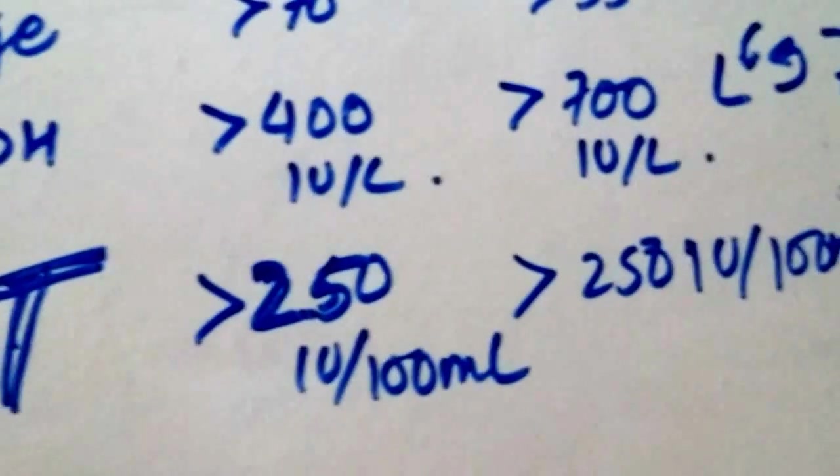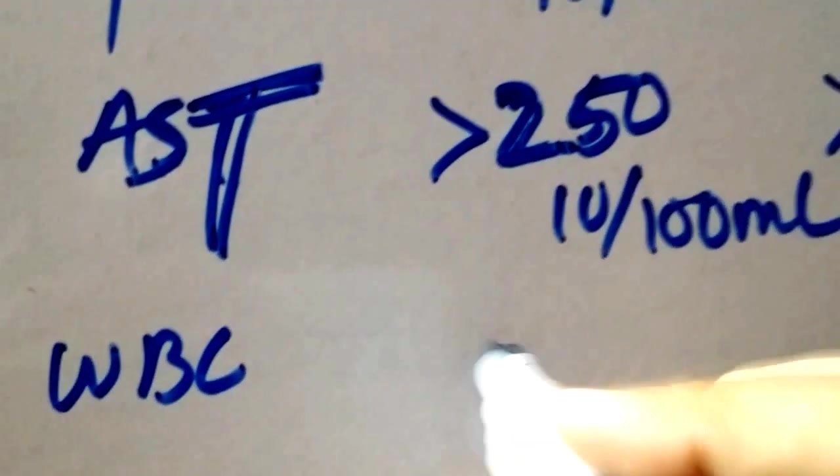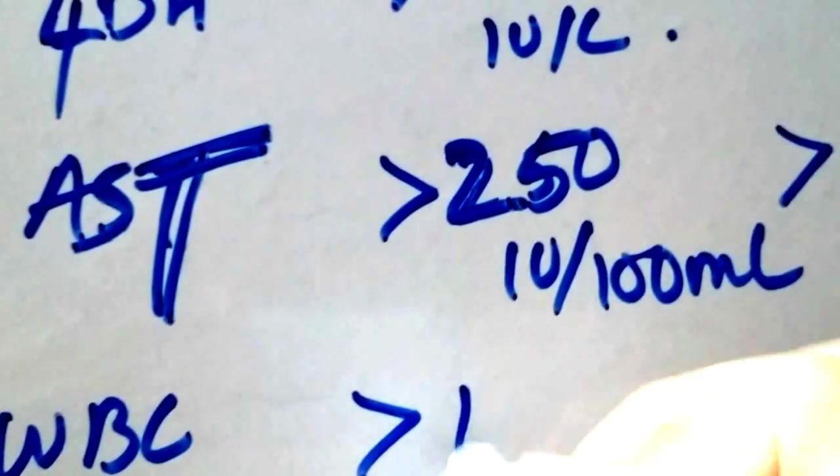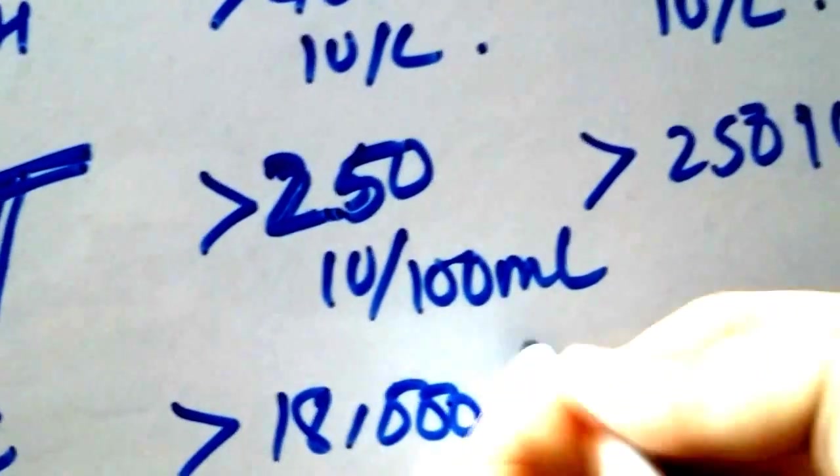And W is for WBCs. For gallstone pancreatitis, it's greater than 18,000 per cubic millimeter.